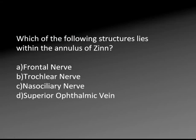Quick question to see if everybody's still awake: which of the following structures lies within the annulus of Zinn? Is it A, the frontal nerve; B, the trochlear; C, the nasociliary nerve; or D, the superior ophthalmic vein? The answer is C, the nasociliary nerve.